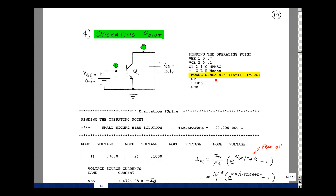It's dot model, then our name, and then what is it? It's an NPN transistor, and then the parameters that you want to specify. I'll make I sub s equal to 1 femtoamp and beta f equal to 200. I'm going to ask for the operating point, and we'll see what we get.